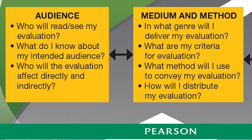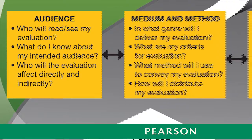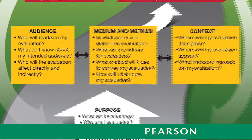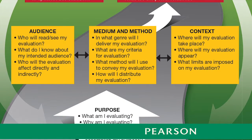Likewise, I always want to show students that when thinking about and asking about audience, medium, and method, they should also start to question the context of their evaluations. Where will it occur? Where will it appear? What limits their evaluations? Each of these kinds of questions should be asked simultaneously with other questions about medium and method, because all of the questions affect how writers might need to revise those questions.